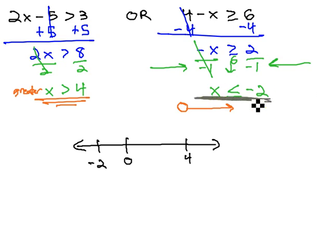Graphing the other inequality, x is less than or equal to negative 2 means we have a closed dot at negative 2. And because x is smaller, pointing at the x, less, we want smaller values going off to the left.